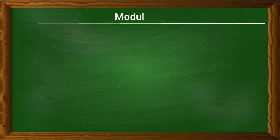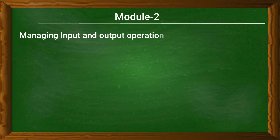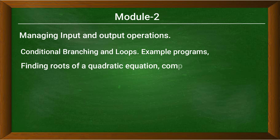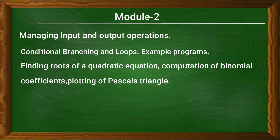In module two we are going to discuss about managing input and output operations, conditional branching and loops, with examples related to conditional branching and looping — such as writing a C program to find the roots of a quadratic equation, computation of binomial coefficients, plotting of Pascal's triangle, and many other examples to help you understand these concepts.